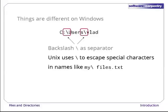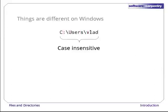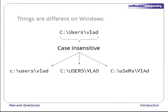This causes headaches because Unix uses backslash to escape special characters. For example, if you want to put a space in a file name, you would write it as backslash space. Please don't ever do this though. If you put spaces, question marks, and other special characters in file names on Unix, you're likely to confuse the shell and a lot of other tools. Finally, Windows file names and directory names are case insensitive — upper and lower case characters mean the same thing. This means the path C:/users/vlad could be spelled in 1024 different ways.